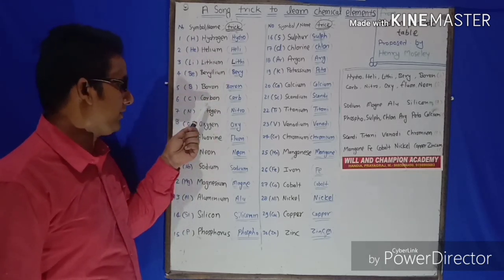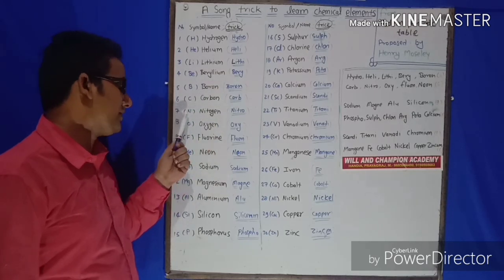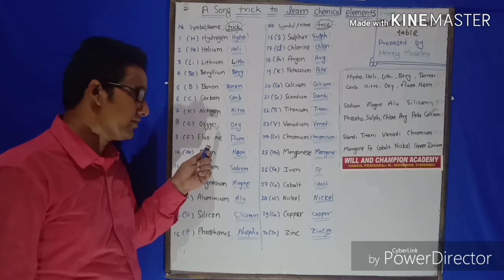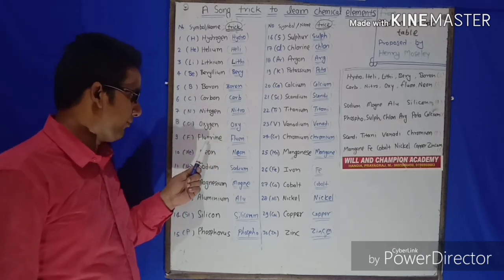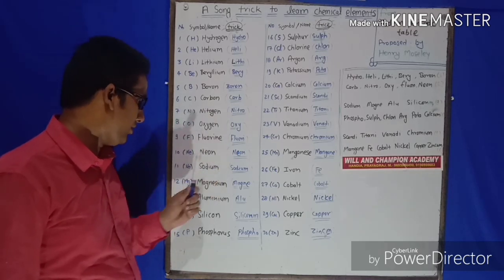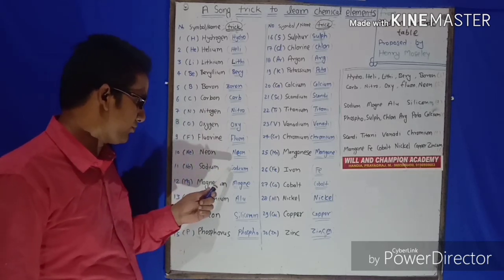C stands for Carbon, say Carbo. N stands for Nitrogen, say Nitro. O stands for Oxygen, say Oxi. F stands for Fluorine, say Fluori. Ne stands for Neon, say Neon. Na stands for Sodium, say Sodium.